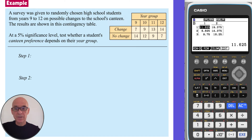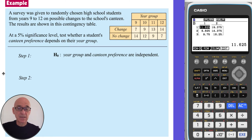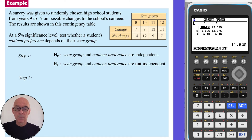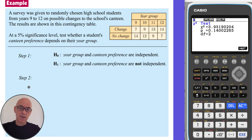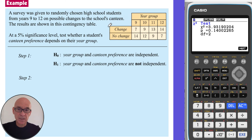In this question, we're asked to test at the five percent level of significance whether a student's canteen preference depends on their year group. The null hypothesis is that year group and canteen preference are independent. The alternative hypothesis is that year group and canteen preference are not independent. The next step is to enter the observed frequencies into the calculator. This contingency table has two rows and four columns.